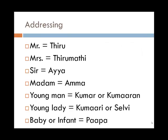Now let's look at how to address people. Mister is 'tiru' followed by the name. Mrs, for a married woman, is 'tiramadi'. Sir translates to 'ayya', and madam is 'amma'. A young man can be referred to as 'kumar' or 'kumaran', a young lady as 'kumari' or 'selvi', and a baby is generally called 'papa'.